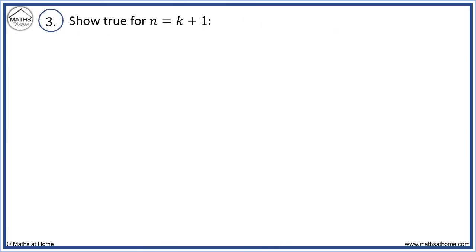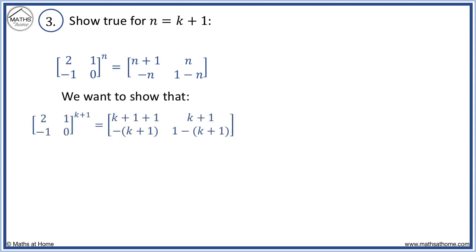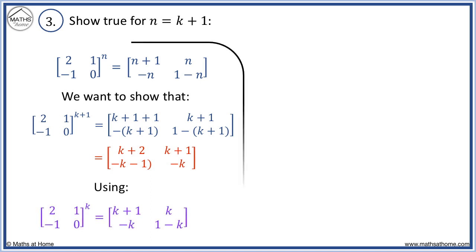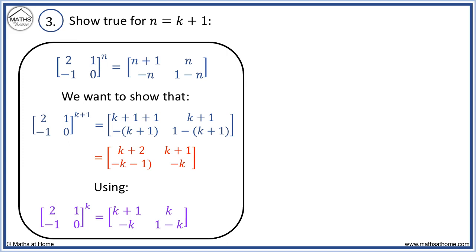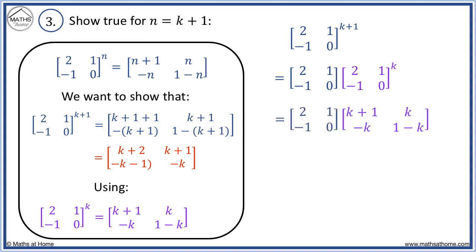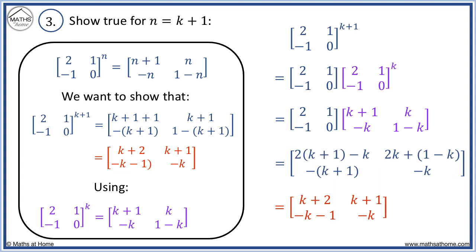We show it is true for n equals 1, and we assume the left-hand side equals the right-hand side when n equals k is substituted in. This is what we wish to prove. When we substitute n equals k plus 1, we want to show this result, which can be simplified accordingly. We write the matrix to the power of k plus 1 as the same matrix to the power of 1 multiplied by the matrix to the power of k, then substitute using our assumption from step 2. Multiplying and simplifying the brackets, we obtain the desired result. We conclude as previously shown.